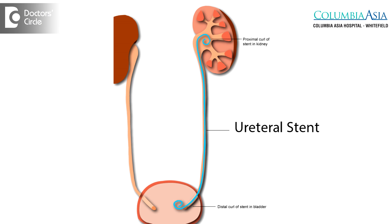A ureteral stent is generally a tube which comes from the kidney to the bladder, bypassing the stone or an obstruction. Usually in urological conditions, this stent is placed after any procedure in the ureter or in the kidney, so that there is no obstruction to the flow of urine during the immediate post-operative period.